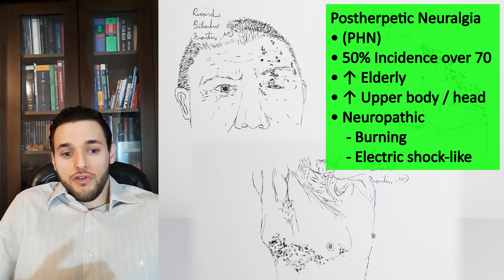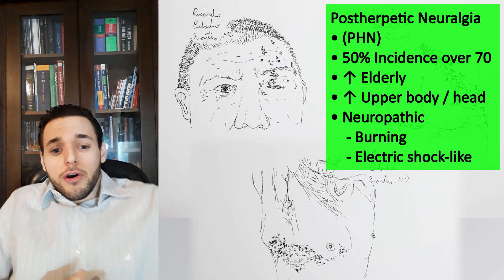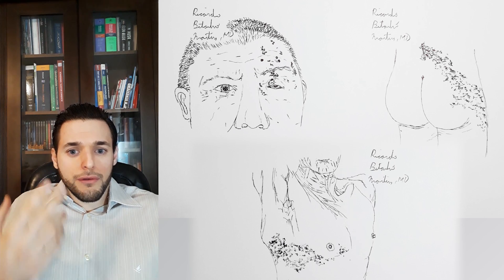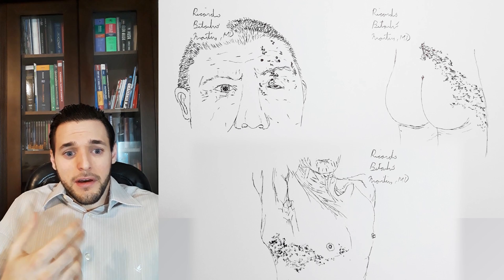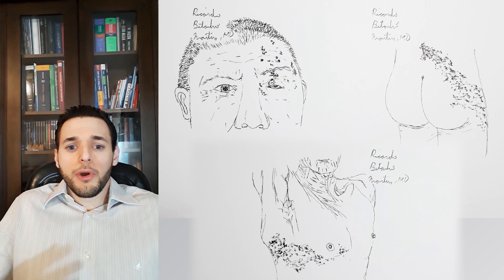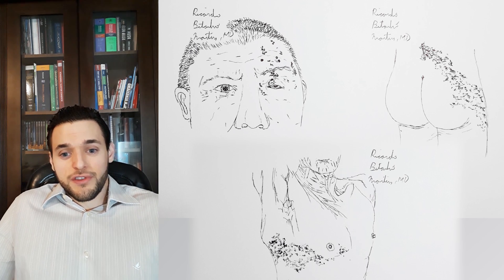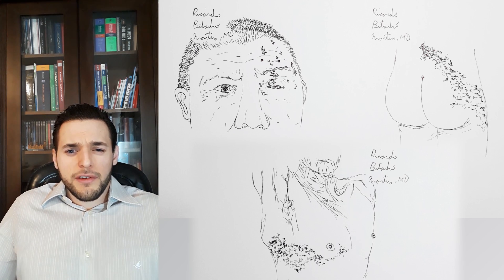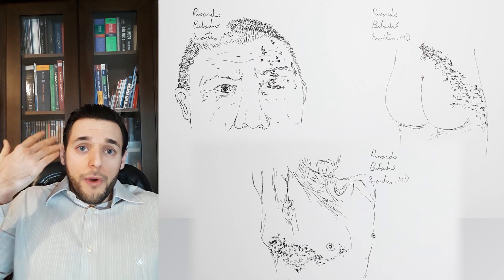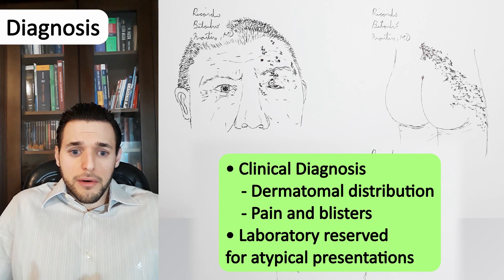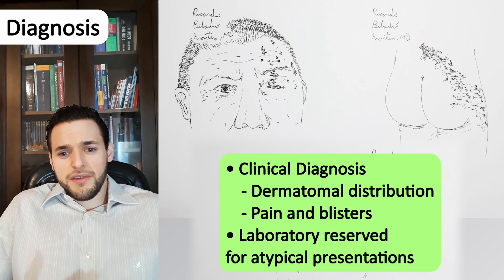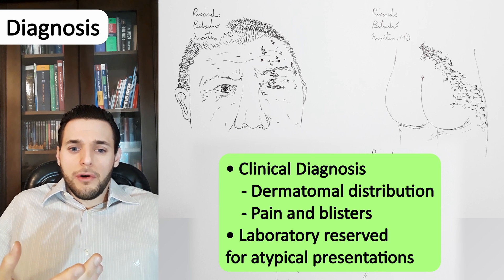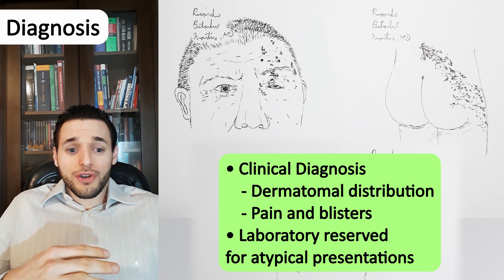Neuropathic pain is usually described as burning or electric shock-like. Rare complications exist, such as palsy from motor involvement and encephalomyelitis, but these are generally restricted to immunocompromised patients. Complications associated with special sensory organs, such as the eyes and the ears, are present only when the zoster affects cranial nerves. Diagnosis is usually clinical, with limited gain from laboratory studies such as PCR of the vesicular fluid. These tend to be more useful in atypical presentations, such as zoster presentation without blisters.